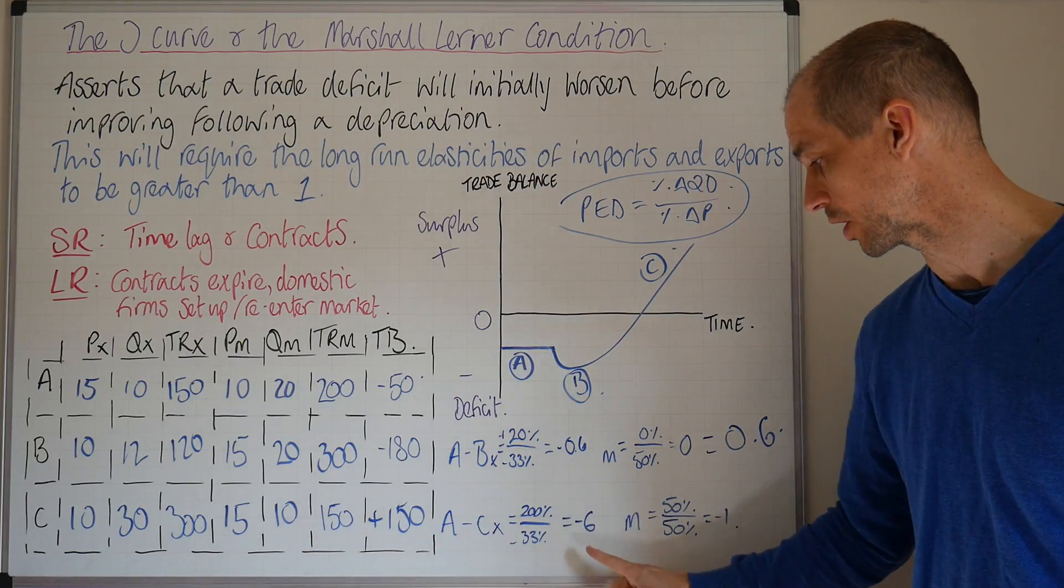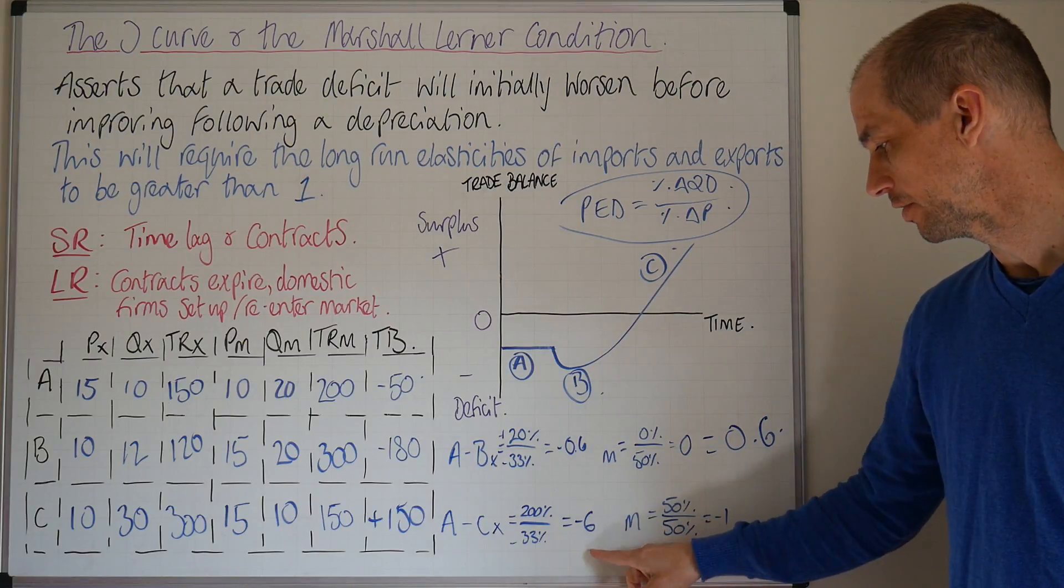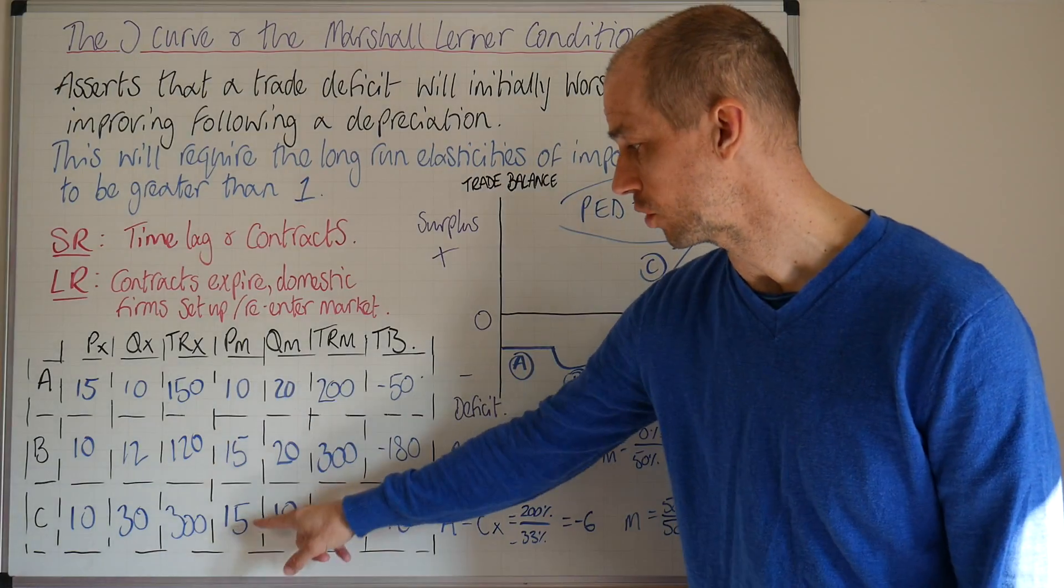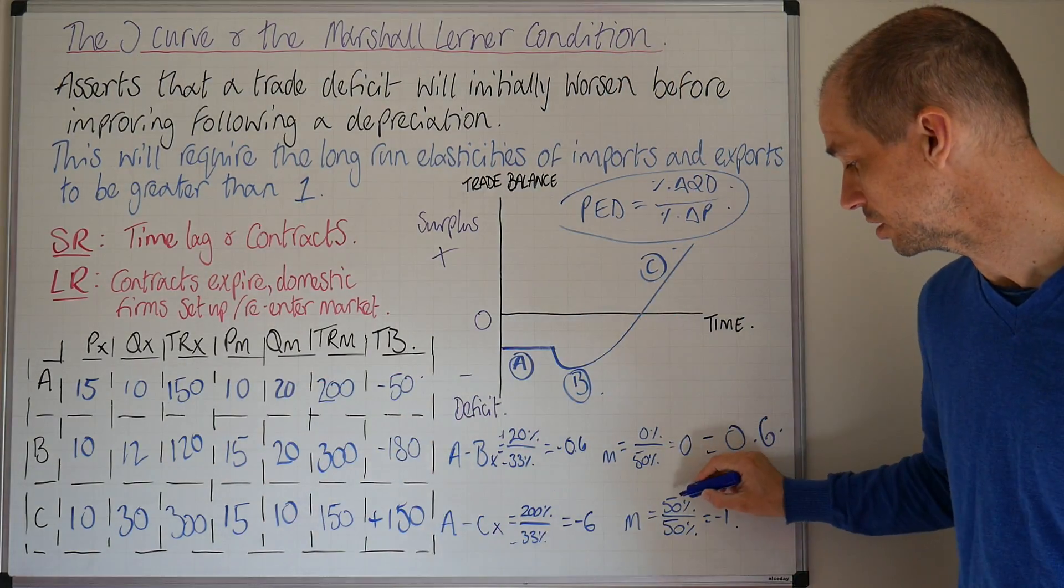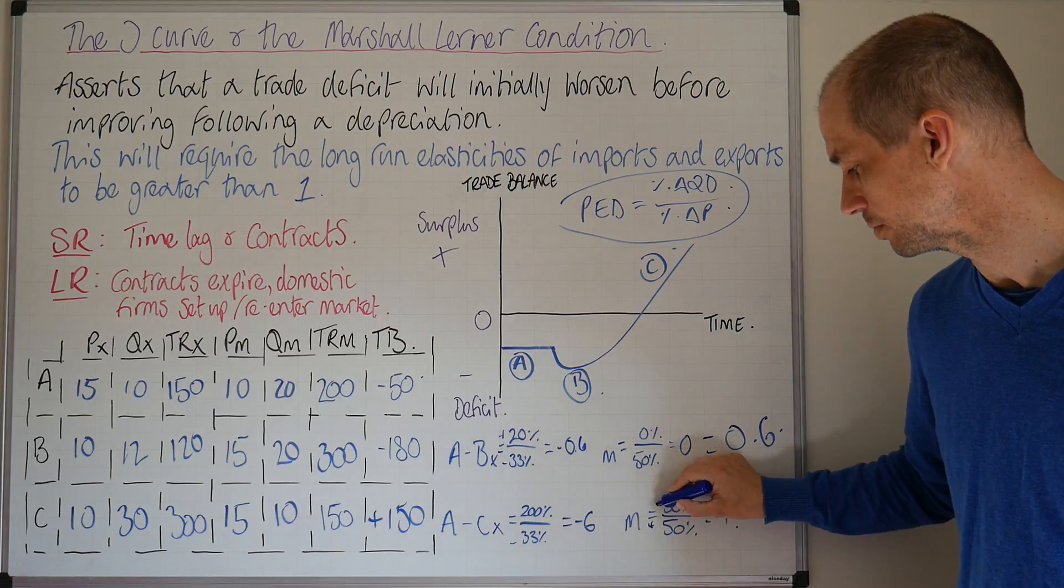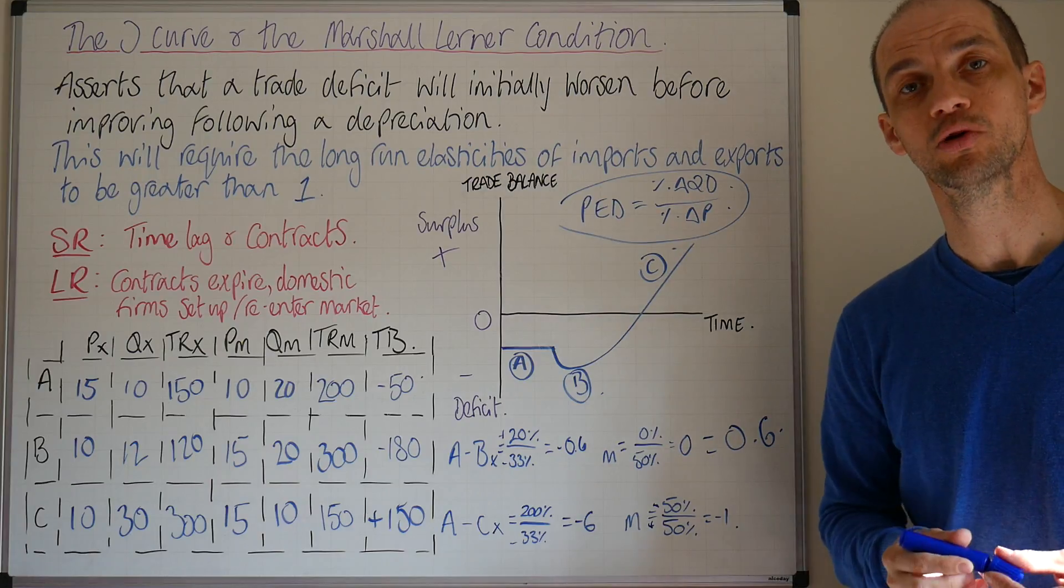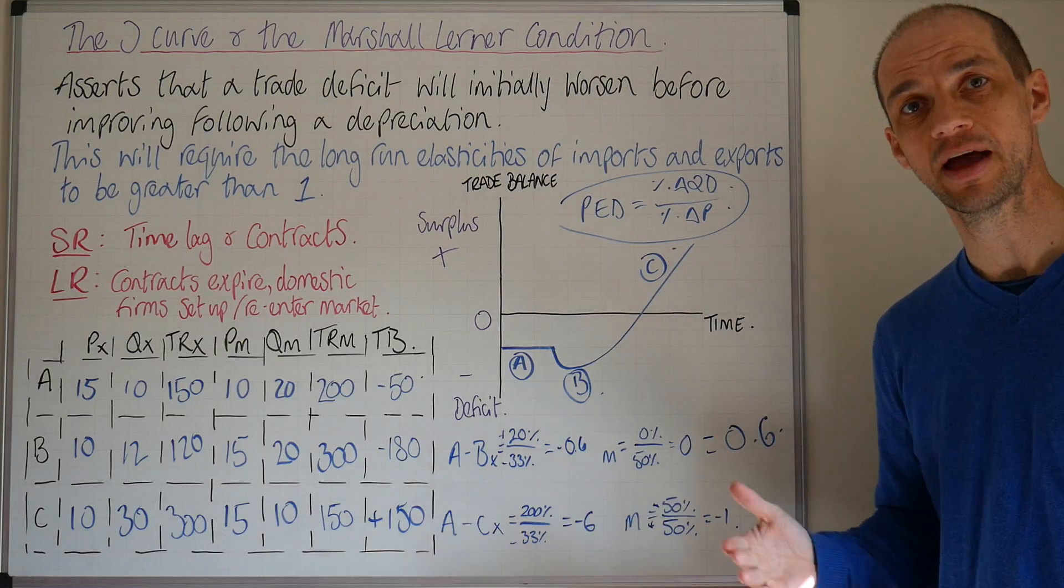For imports, it's a 50% change in price and a 50% reduction in actual quantity demanded, which equals minus 1. Disregarding the negative, we can see the Marshall-Lerner condition is nicely upheld there.